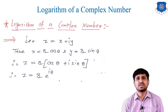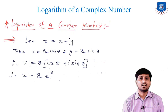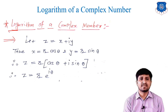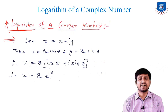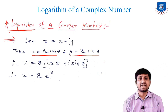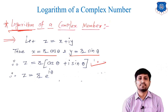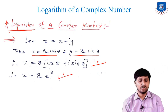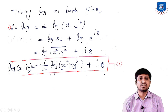First of all, let's understand the concept of logarithm of a complex number. Let z = x + iy. We know that x = r cos θ and y = r sin θ, so z = r(cos θ + i sin θ). This is the polar form.